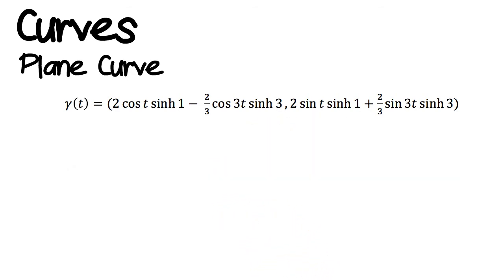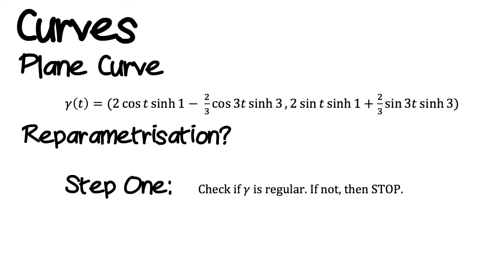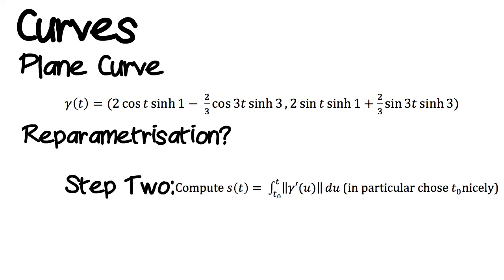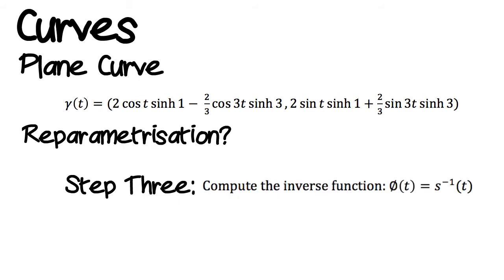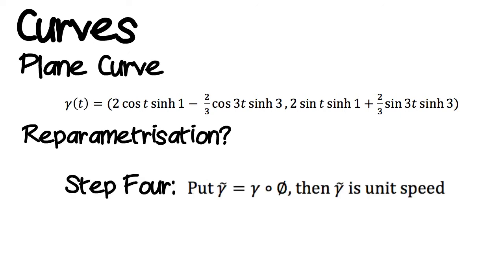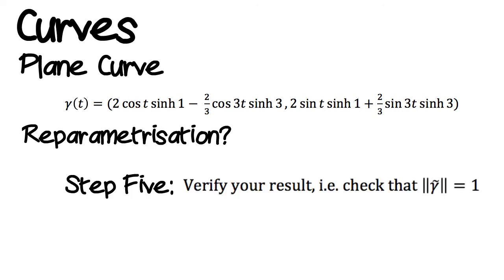Knowing that this curve is regular, we can try to re-parameterise by unit speed. What we mean by this is there is another way to write this curve such that none of its properties change except that the norm of the derivative is now equal to one. In order to re-parameterise a curve, there are five steps to follow. Step one is gamma regular. Step two, compute the arc length function s of t. Step three, compute the inverse function t of the arc length function. Step four, create a composite function called gamma tilde. Step five, check that gamma tilde has unit speed.